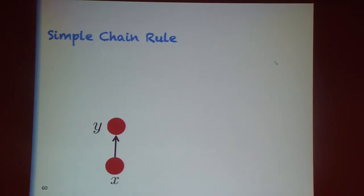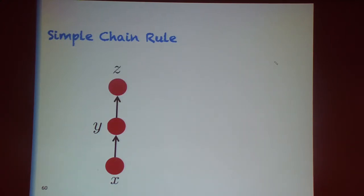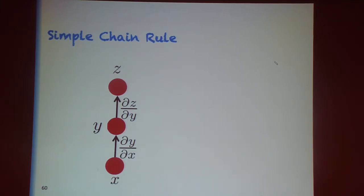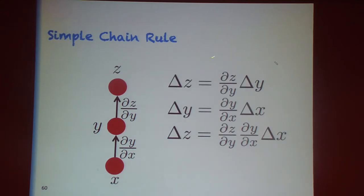We construct a computation graph where each node represents the result of a computation and each arc represents a dependency. We associate each arc with partial derivatives. If I make a small infinitesimal change delta_y in y, I get a change delta_z in z, and the scalar dz/dy relates these two changes linearly. Similarly, delta_x changes are transformed into delta_y changes using dy/dx.